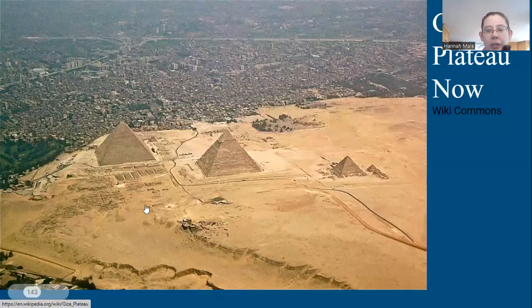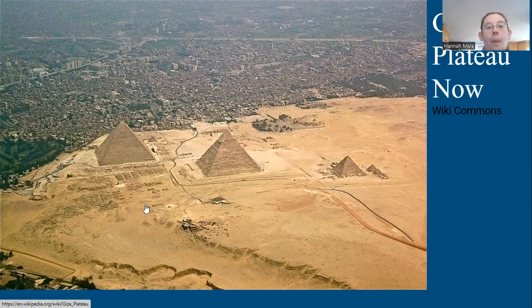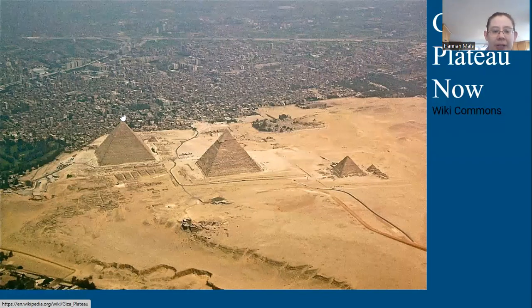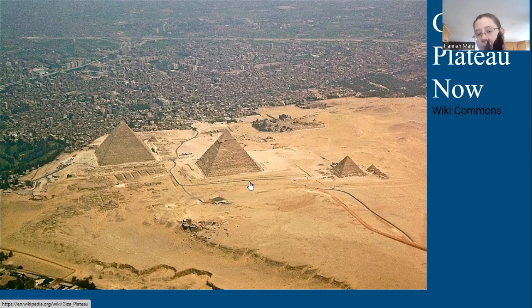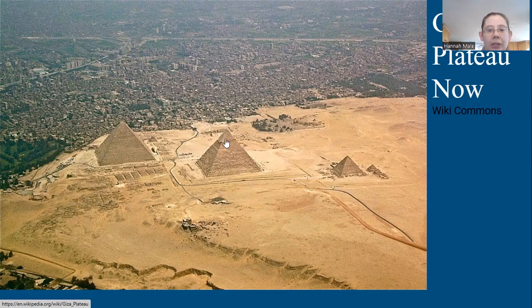This is Giza from the air. It gives you an idea of how it looks from the urban sprawl side — this is modern day Cairo — and then from the desert side, where you can see all three pyramids and their funerary structures, the mastaba fields, and scattered rock-cut tombs, along with some of the modern day roads.